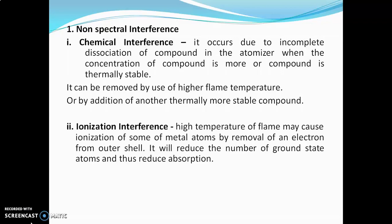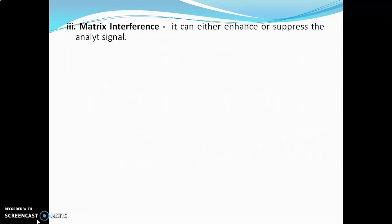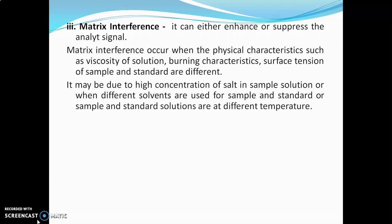Ionization interference: the high temperature of the flame may cause ionization of some metal atoms by removing electrons from the outer shell. This reduces the number of ground-state atoms and thus reduces absorption. It can be controlled by addition of an excess of easily ionized elements to both the sample and standard. Matrix interference can either enhance or suppress the analyte signal.